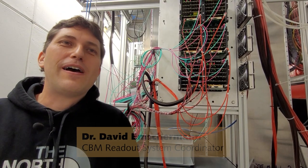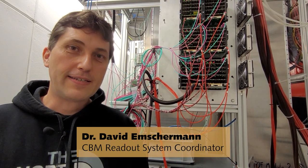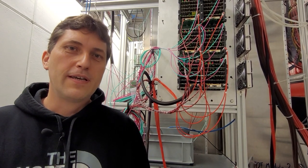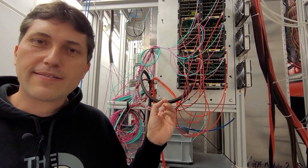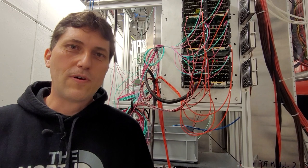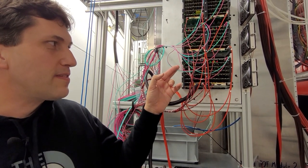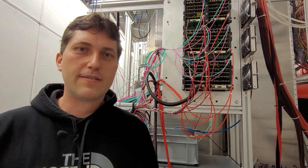Let me explain to you how we take data with the CBM experiment. As you know, we have very high interaction rates in the CBM experimental setup. The data is digitized with individual front-end electronics on each of these detector systems. It is then converted into optical signals which we transfer through these colorful optical fibers to our data acquisition system which is located 50 meters away from the cave.